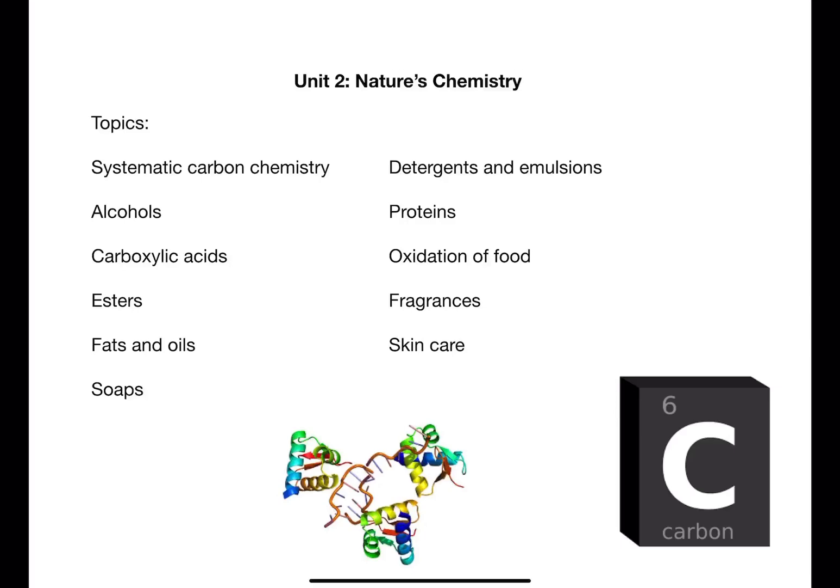Unit two is called nature's chemistry. This unit has a number of different topics that place carbon chemistry in everyday contexts. Systematic carbon chemistry is covered throughout the topic through systematic naming and structures of different families. The properties, structures and uses of alcohols and carboxylic acids are covered in national five and recapped and extended in higher. This leads into the esters topic, another chemical family.